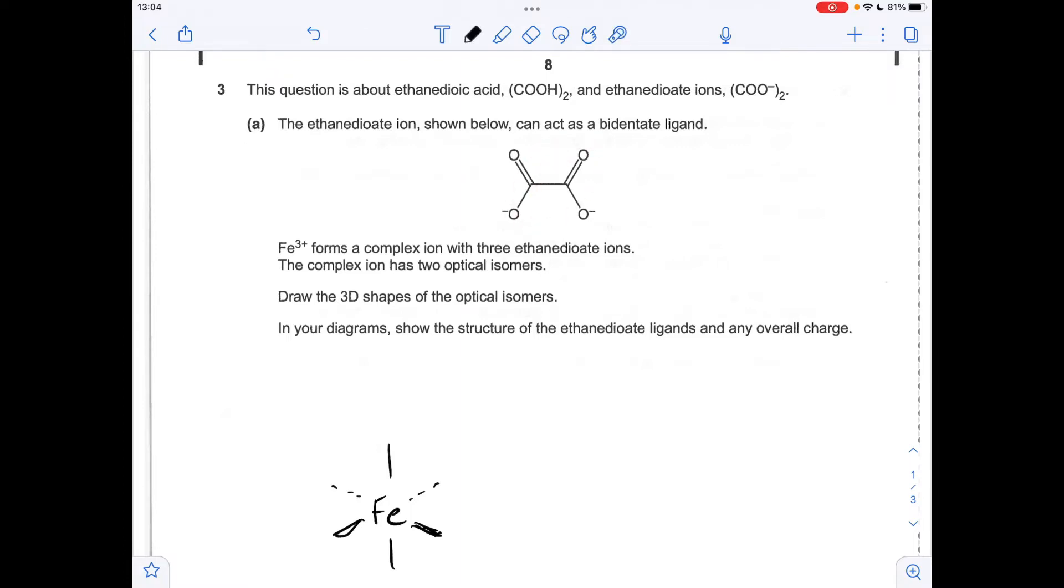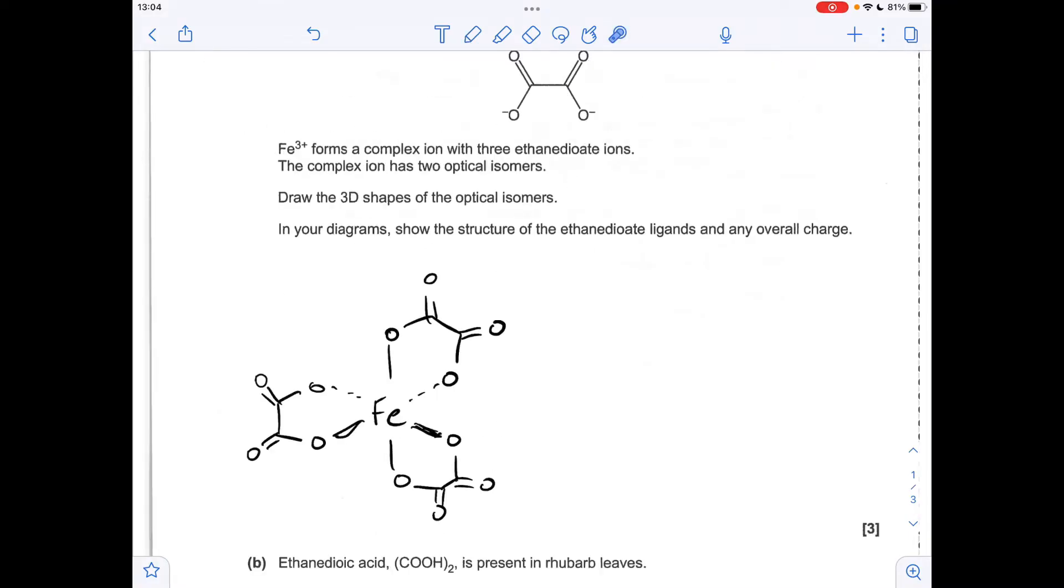So they join via the single bonded O. So we do that. So there's one on. I'll just put the others here and here. So there they are there. We'll just put a square bracket around it and explain the charge.